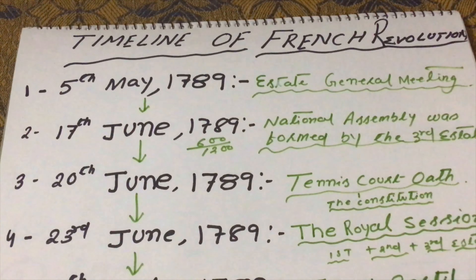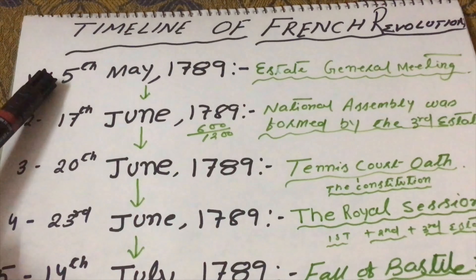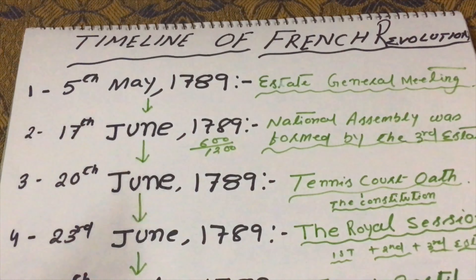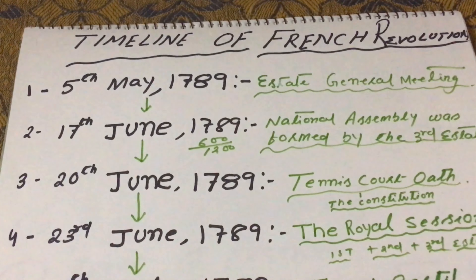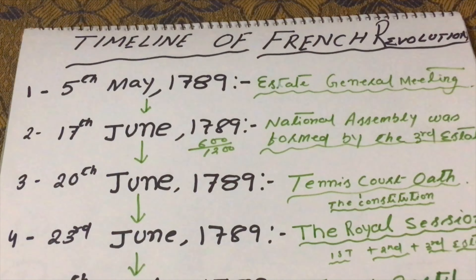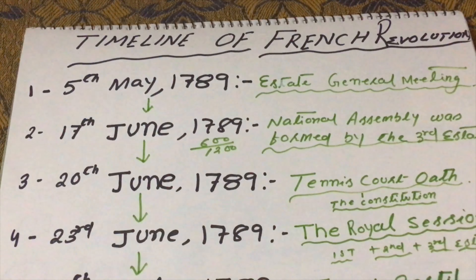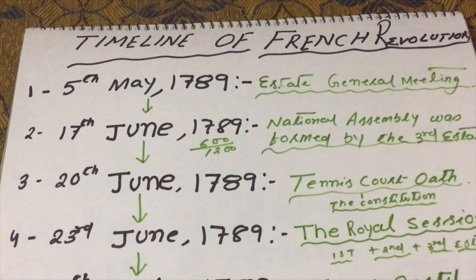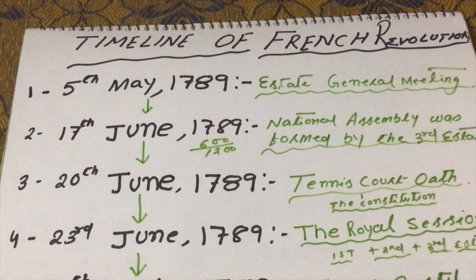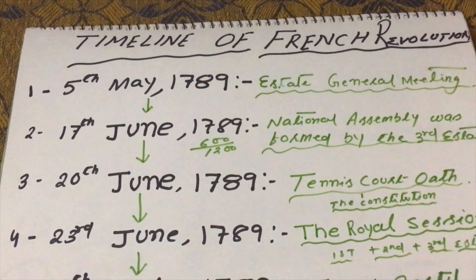To understand this chapter, see the first date: on 5th May 1789, the king summoned the State General — after a lapse of 175 years. The State General is like our parliament where Lok Sabha and Rajya Sabha sit together. In the State General, all three estates — first, second, and third state — were sitting together, and on 5th May 1789 this meeting was held.